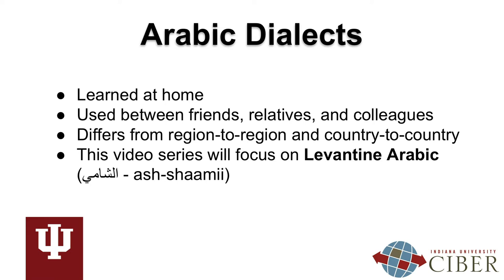For example, the Gulf dialect widely spoken in countries such as Kuwait, Bahrain, Qatar, the UAE, Saudi Arabia, and Iraq differs from the Moroccan dialect in Morocco, which differs from the Egyptian dialect in Egypt.